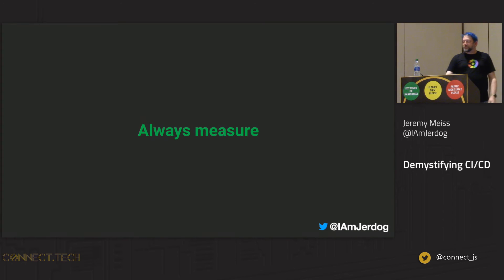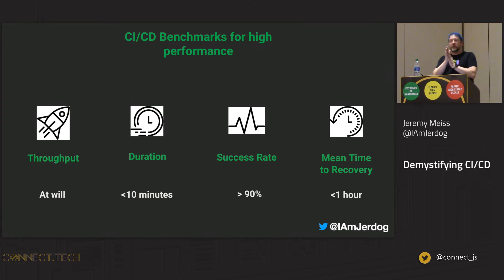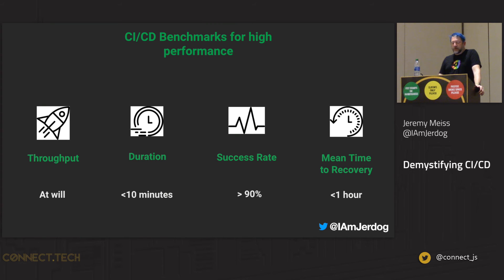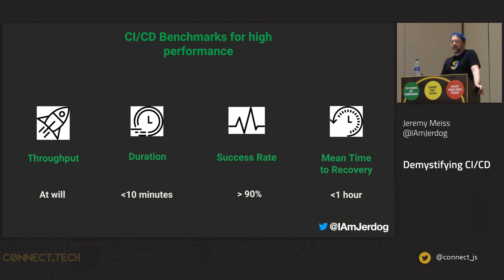Some benchmarks for high-performing CI teams from our research: throughput — pushing code as often as you can; duration of your builds less than 10 minutes; success rate more than 90% for those builds; and mean time to recovery less than an hour. Is everybody going to be at this on day one? Probably not, and that's okay. I go back to what I said earlier: fail fast. It's okay to have that failure and not hit these benchmarks immediately — but these are good stats to aim toward.